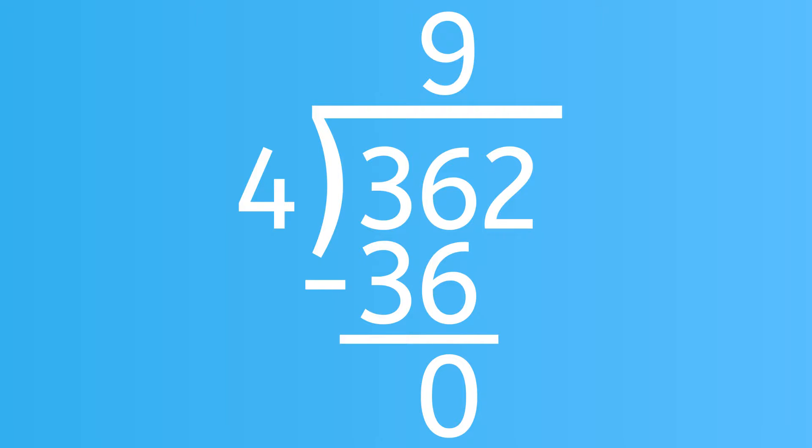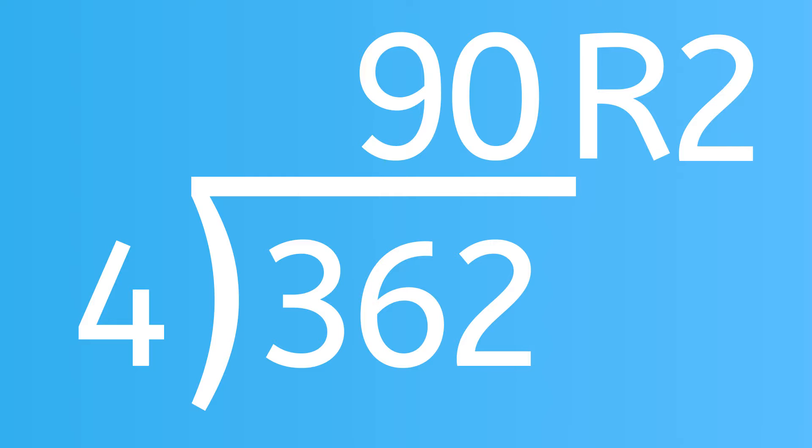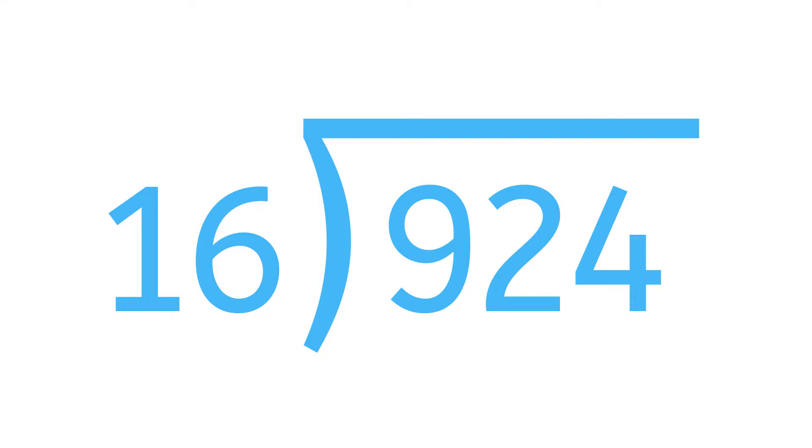But now we have a problem. We just brought down a 2 and a 4 can't go into a 2 at all. So we have to write a 0 over the 2 above the long division symbol. And now we have a remainder of 2 left over. So we write the answer as 90 R 2.